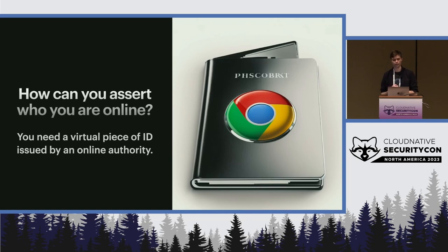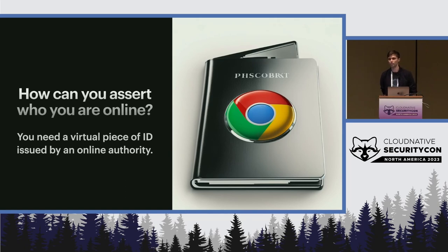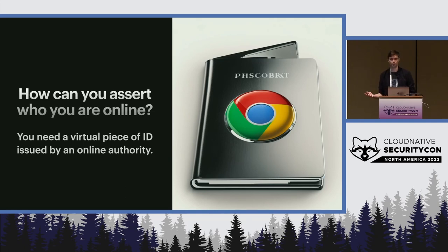Going back to our bar analogy: when I presented the bartender with the ID, that's like the JSON Web Token itself. When the bartender saw that it was issued by the Canadian government, that was like seeing that the JSON Web Token was signed by a trusted authority like Google or your authentication service. Finally, they read the information from the ID or token and made some assumptions about who I was because they trusted it.